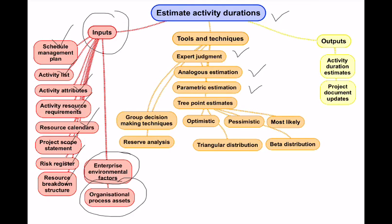Parametric estimation is about averages. For example, if I traveled to Ooty 10 times last year, I can take an average. Typical examples include cost per square foot in construction, or average effort required to fix one defect in software. Parametric estimates are always more accurate than analogous estimation because analogous uses one similar data point, whereas parametric uses an average from a set of data points.